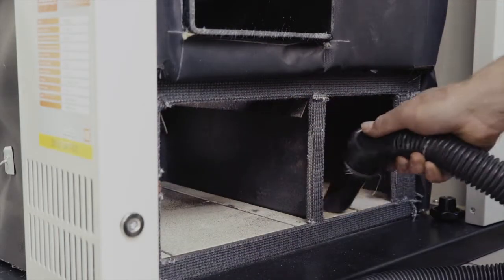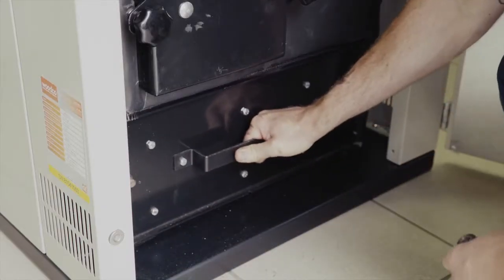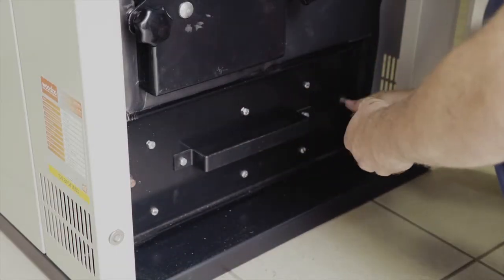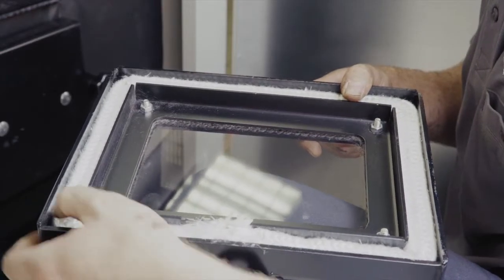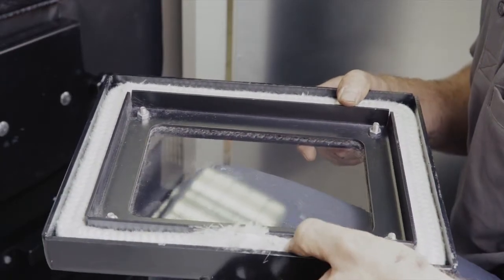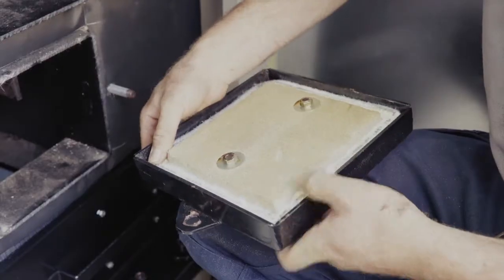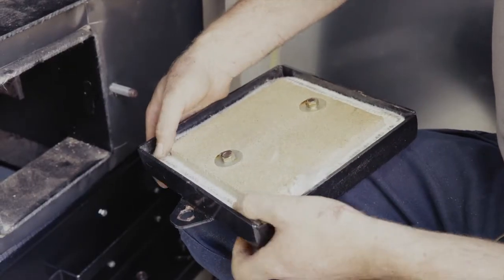Empty ash containers. Ensure the ash boxes are repositioned correctly. Check that the sealing rope and the tape on the lower ash pan door and main combustion chamber door maintain a tight seal. Replace if necessary.